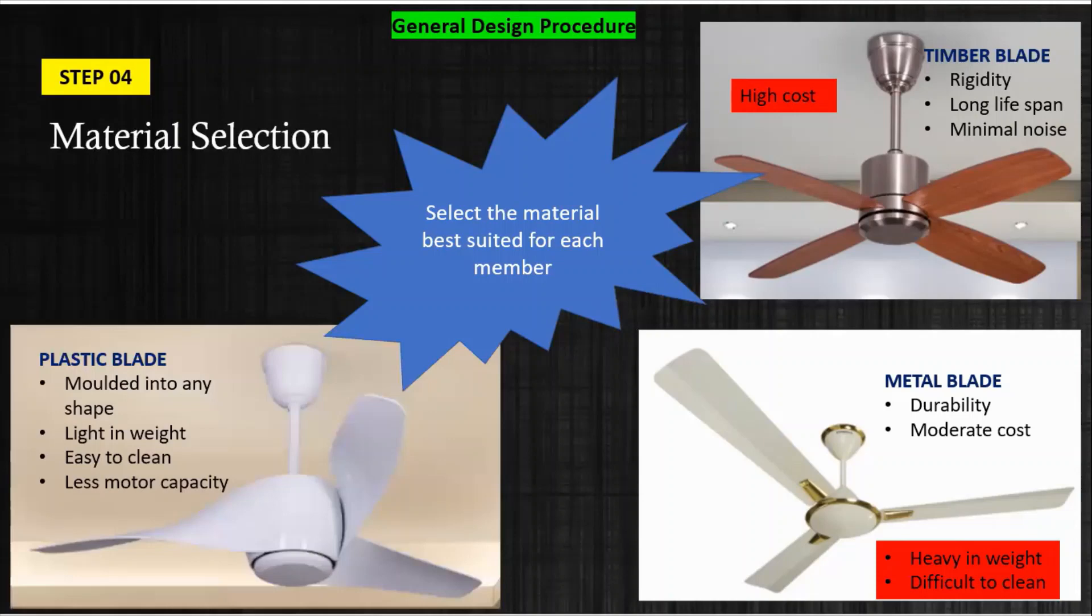Suppose I take another example: plastic material. There are a number of advantages of the plastic blade. If you see that on the screen, it can be molded into any shape. Any complicated shape can be easily molded. It's lightweight, easy to clean, and most important thing is that less motor capacity can be used. Because if you take metal blade it becomes quite heavy, but if it's plastic, weight will be less and according to that the motor capacity can also be less. So this is material selection which is very important.